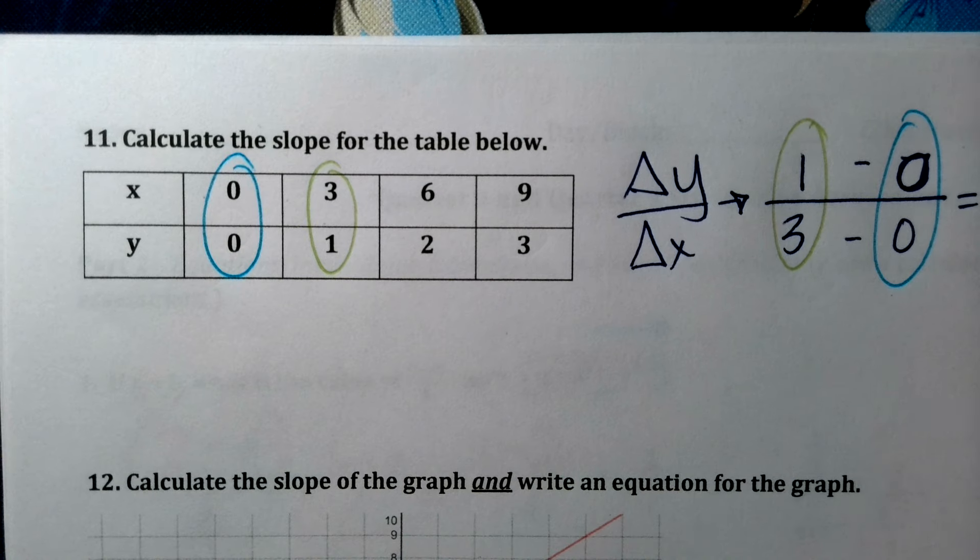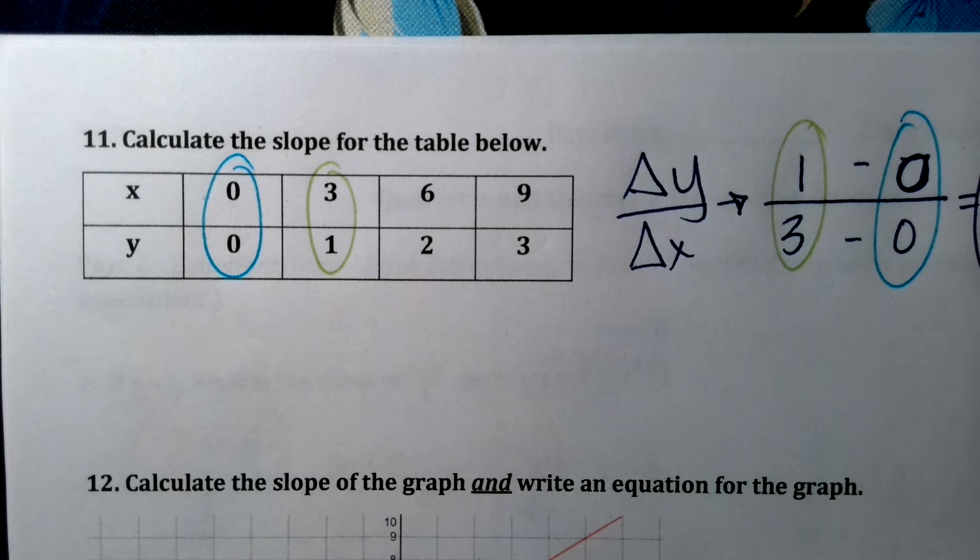1 minus 0 is 1. 3 minus 0 is 3. My slope is 1 third.